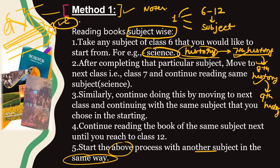You can also pick history and geography together. Class 6 history and geography, finish it. Then class 7 history and geography, finish it. Then move till class 12 where history and geography can be completed. This is your Method 1.